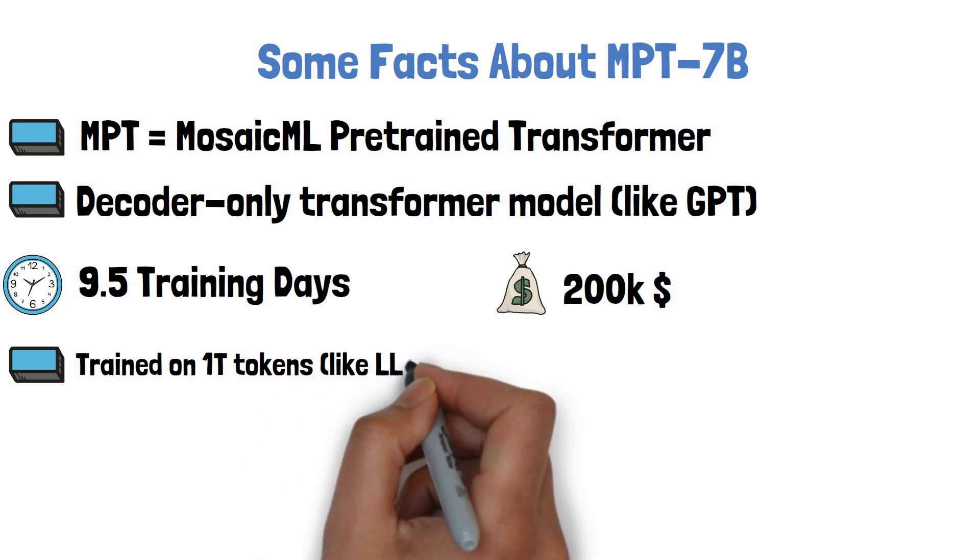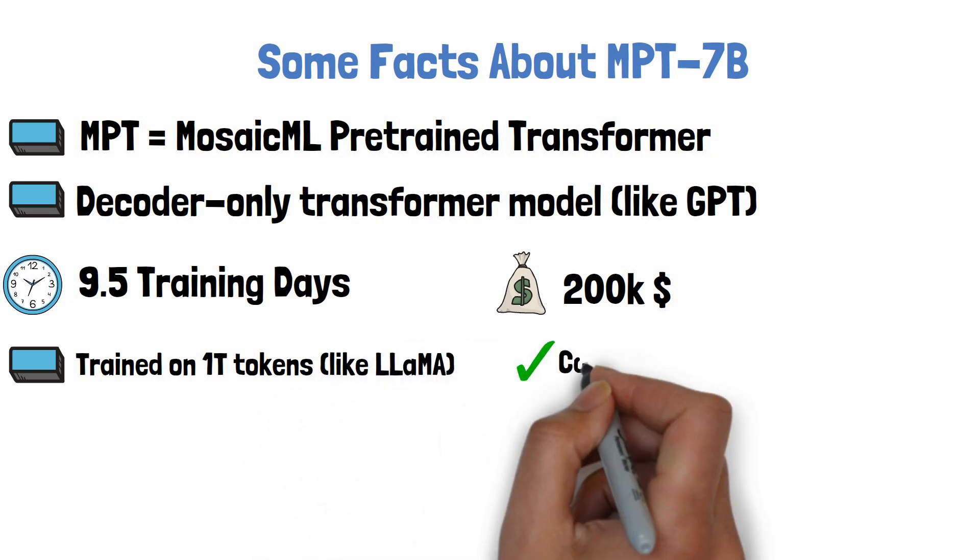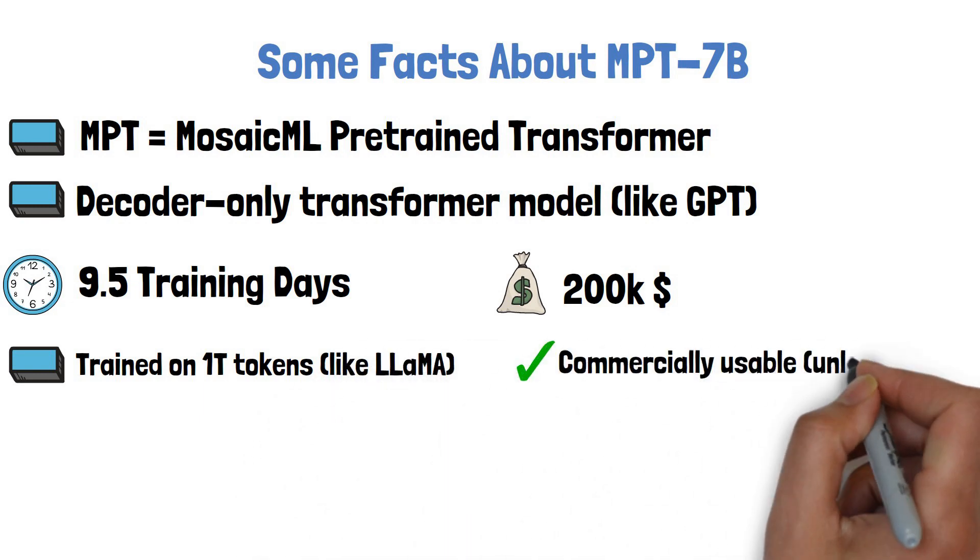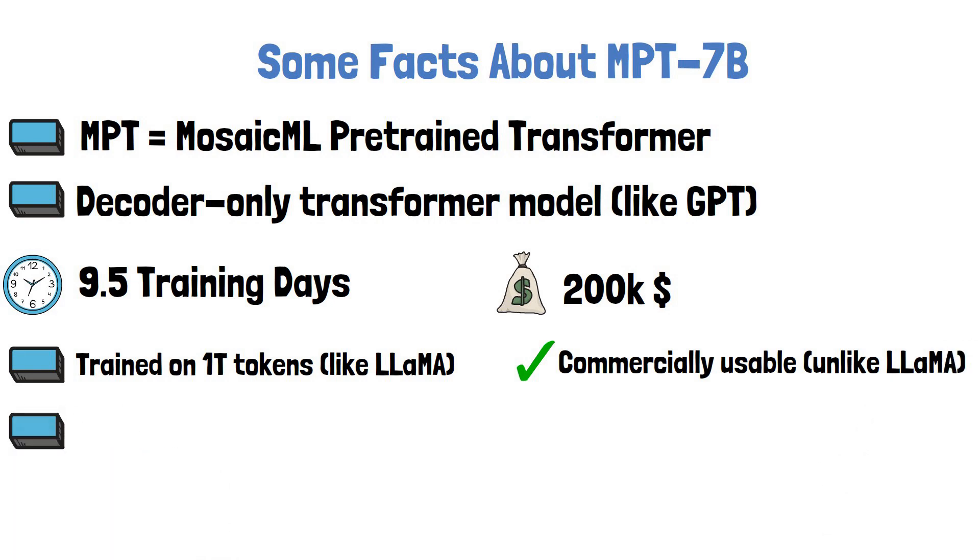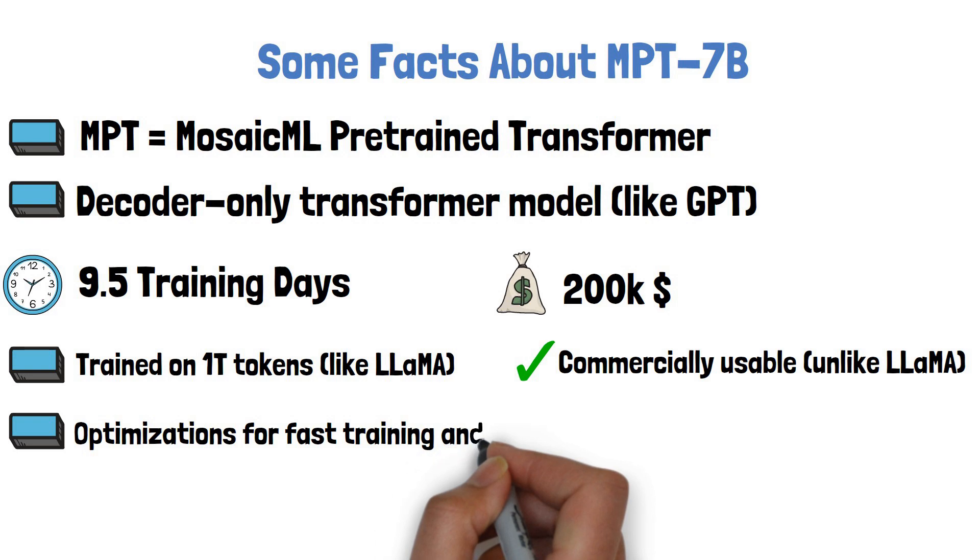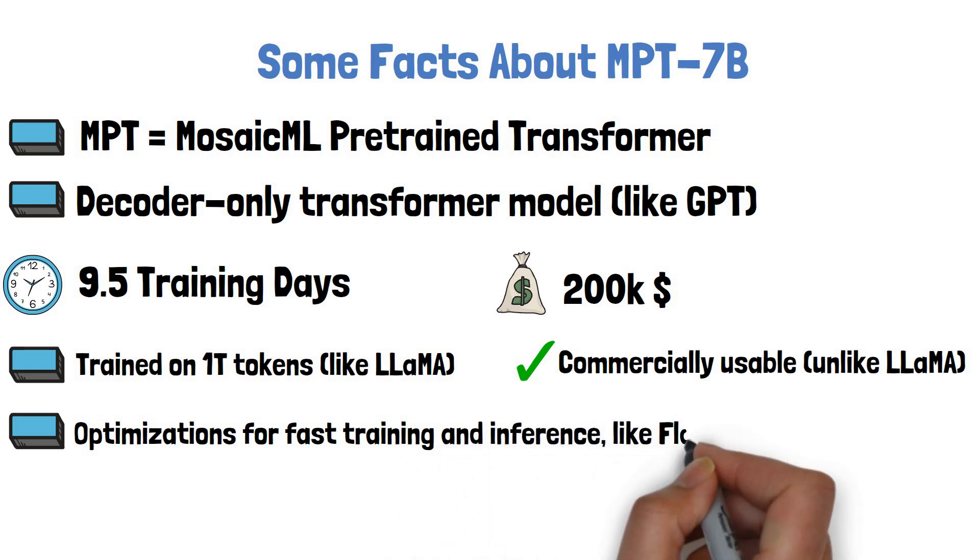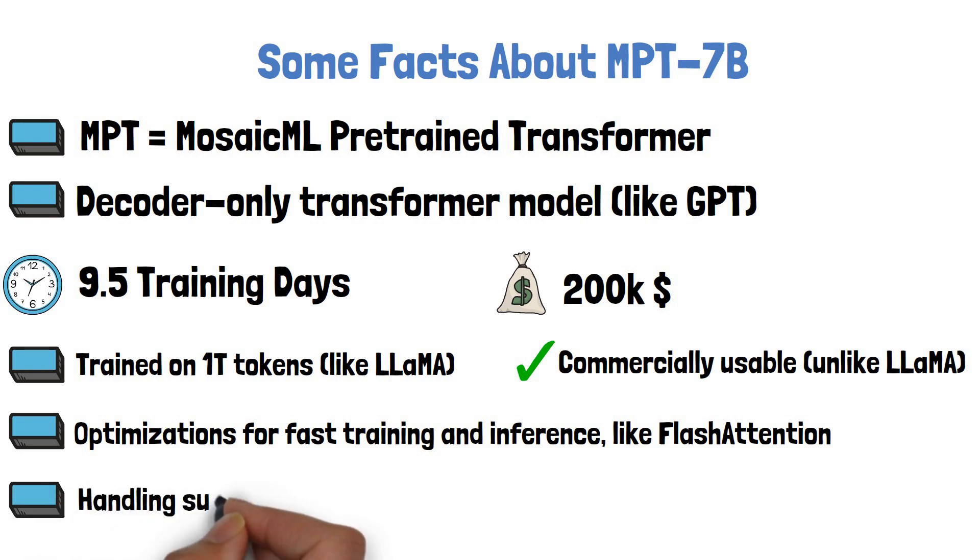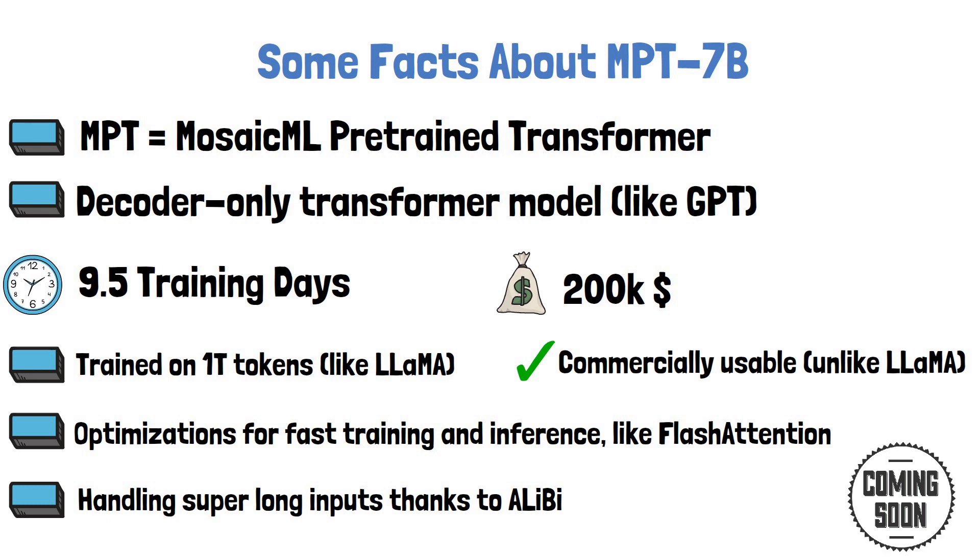It was trained on 1 trillion tokens, like the Llama model, and as mentioned before it is commercially usable, which is unlike Llama. MosaicML mentions that the model and training code includes a lot of optimization from the open source community. One example is Flash Attention that includes GPU optimization and sparse calculations. Another very cool attribute is the ability to handle super long inputs thanks to ALiBi, which we will expand about in a minute.